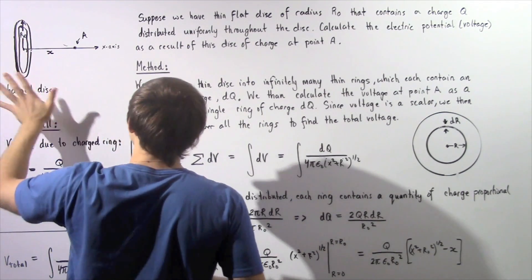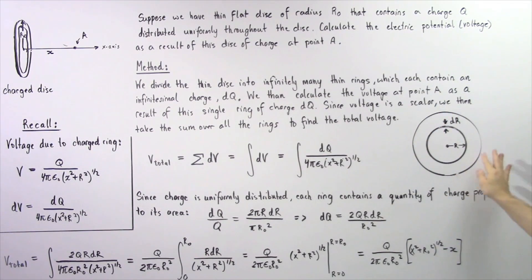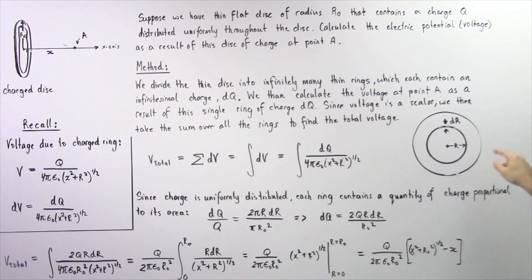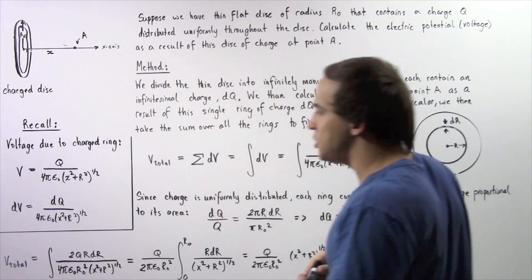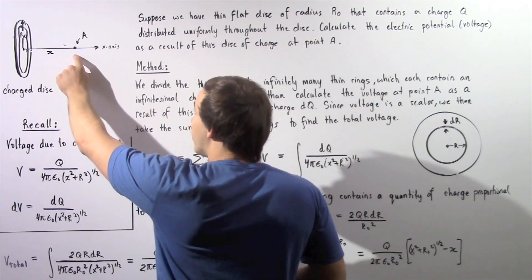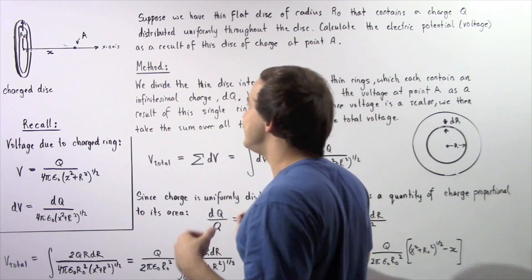If we take this and place it flat on the whiteboard, we get the following picture. This is our disk and this is one particular example of one such ring into which we are dividing our disk. The thickness of this ring is given by an infinitely small thickness dr, and the radius of this ring is given by R. Because the quantity of charge on this ring is given by dq, we replace q with dq, and our voltage at point A as a result of this ring of charge becomes infinitely small and is given by dv.